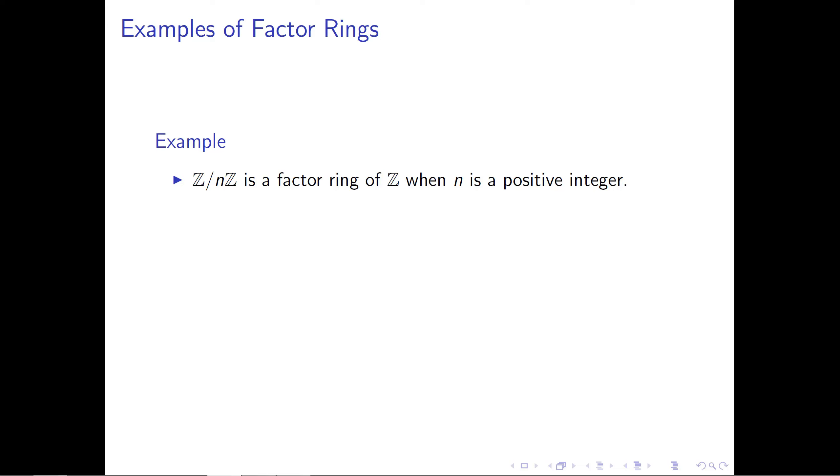So some of the easy examples are Z mod nZ is a factor ring of Z when n is a positive integer. So back in our first collection of videos, when we started talking about what a subring is, we noted that Z mod nZ is not a subring of the integers, because we technically had to change our operations of addition and multiplication to modular arithmetic. And I said there is a relationship going on between these two rings. And now that we have the notion of a factor ring, this is the proper relationship. Z mod nZ and Z are related in that Z mod nZ is a factor ring, not a subring of the integers.